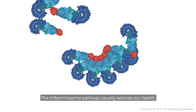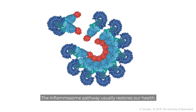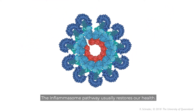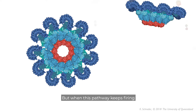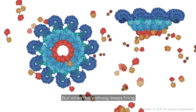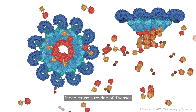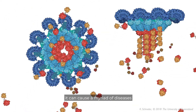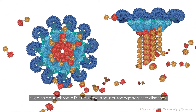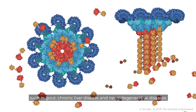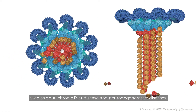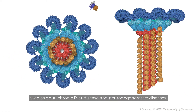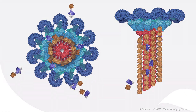The inflammasome pathway usually restores our health, but when this pathway keeps firing, it can cause a myriad of diseases, such as gout, chronic liver disease, and neurodegenerative diseases.